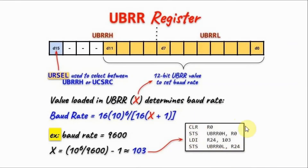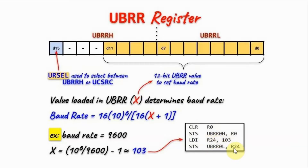This is the assembly code needed to initialize the serial port for a baud rate of 9600. We clear register R0, then copy R0 into the baud rate high register to clear it. Then we copy the value 103 into register R24 and store R24 into the baud rate low register.